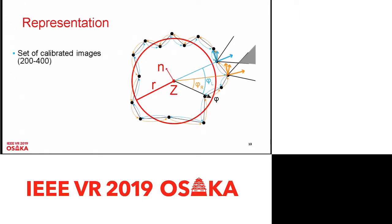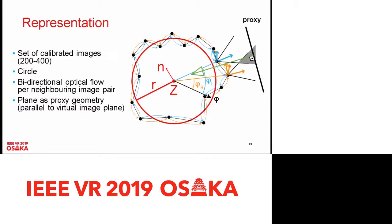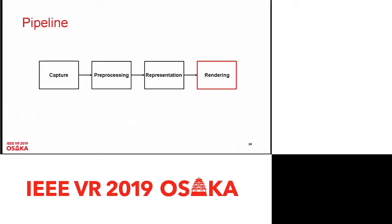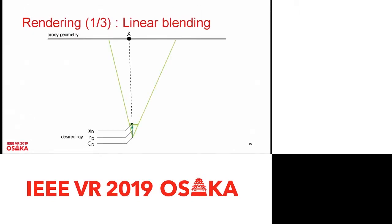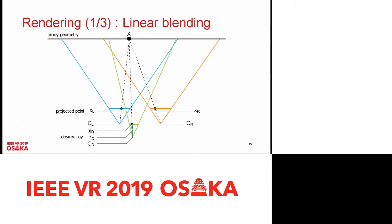From preprocessing we get a set of calibrated images — between 200 and 400 — a fitted circle, and bidirectional optical flow per neighboring image pair. For rendering, we use a plane as proxy geometry — the simplest thing you can think of. This plane is attached to the desired viewpoint, acting like a billboard, always parallel to the virtual image plane. OpenGL rasterizes this proxy and for each desired ray in our desired viewpoint we get a scene point X. From the circle and the registration of viewpoints, we look up a camera pair that observes this point X, project the scene point into the camera pair, and linearly interpolate the color values in those pixels.